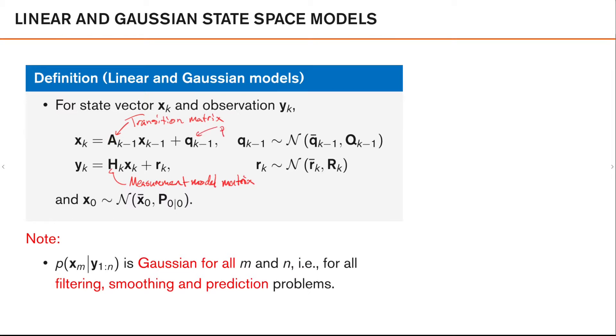Note also that the process noise q_{k-1} and the measurement noise r_k are additive Gaussian noise processes with some mean and covariance. Additionally,